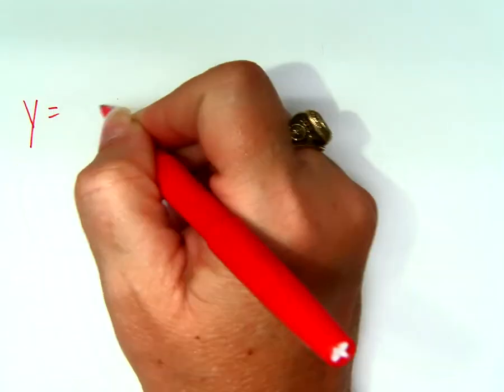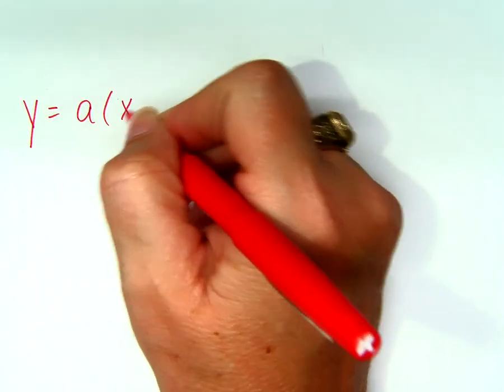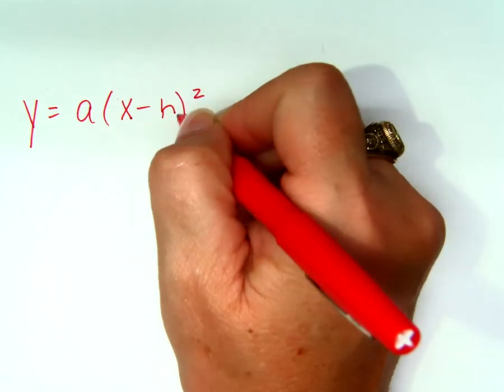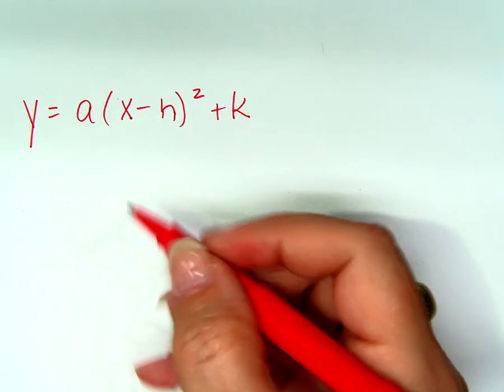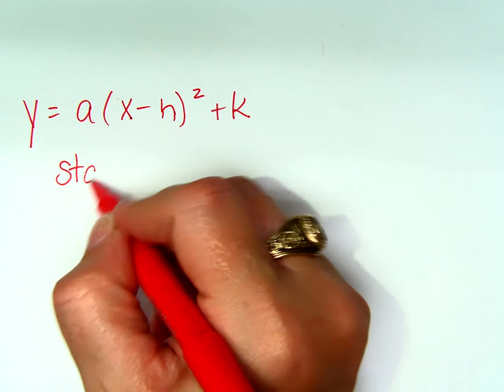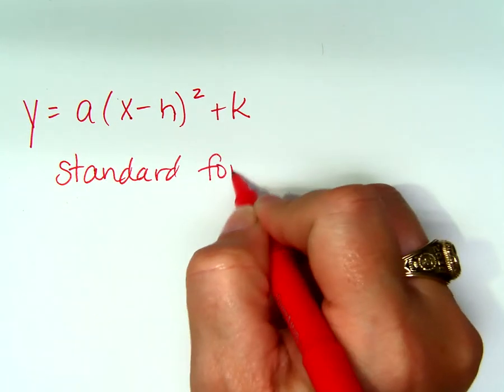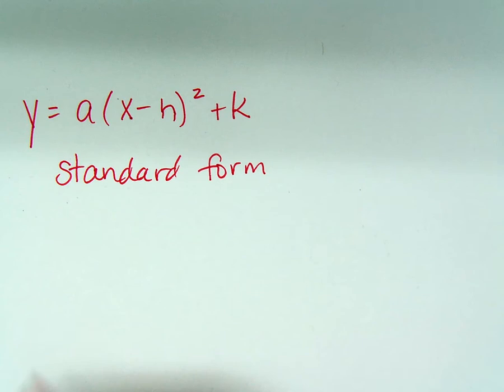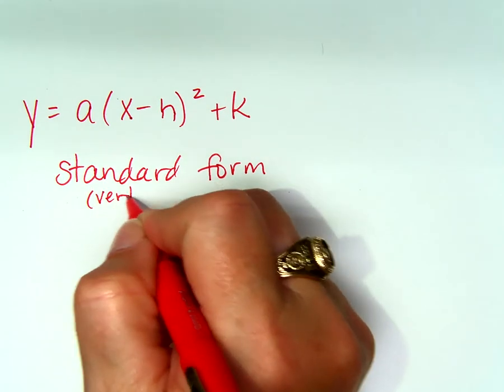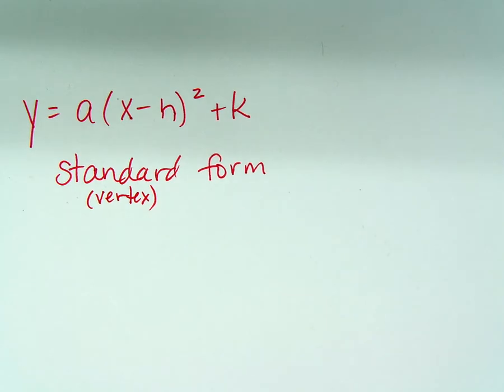Let me just make sure that you understand that real quick. y = a(x - h)² + k. This book calls that standard form. We called it vertex form, but they call it standard form.